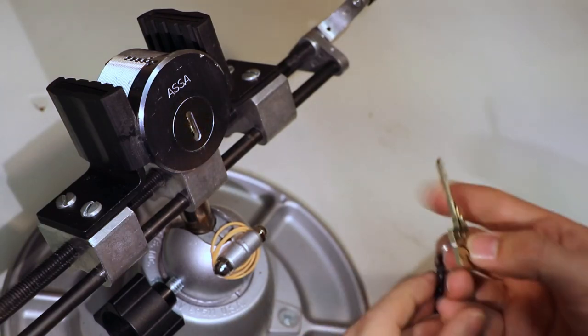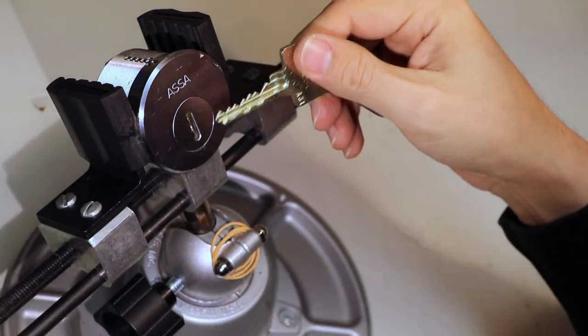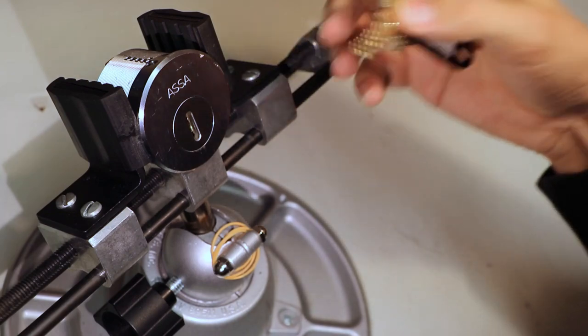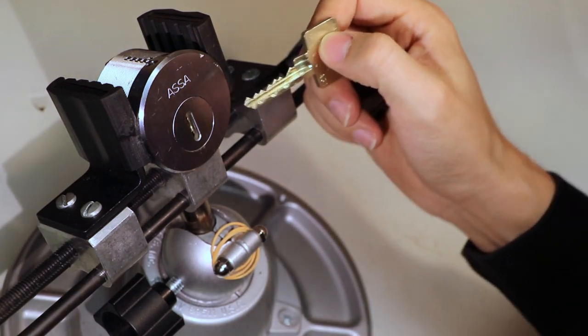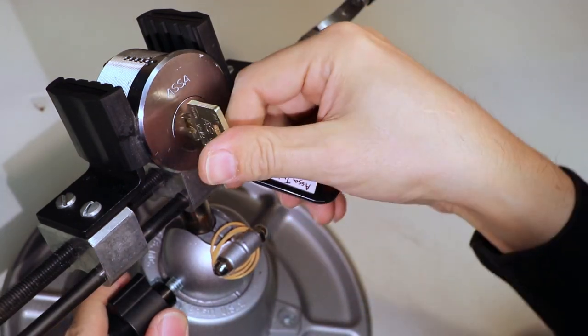I have an Assa Twin V10. It is a six pin lock with gin spool drivers. I don't know if it's matched counter milling, but I'm guessing it is. I'll have to check when we gut it. And it's got five sidebar pins that have false gates that interact with the sidebar.